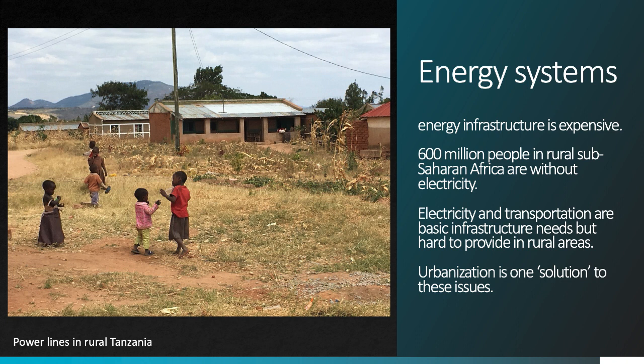If you think about why people choose to move to a city, energy has to be at the top of the list, because electricity and transportation are basic infrastructure needs for all human populations, but they can be very difficult to provide in rural areas and low-income countries. In a sense, then, urbanization is a potential solution to the problem of limited access to energy, at least for these locations.